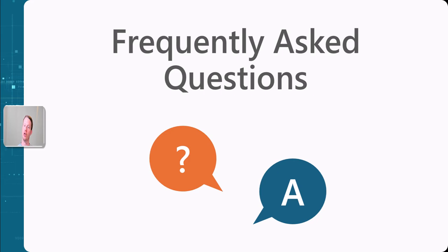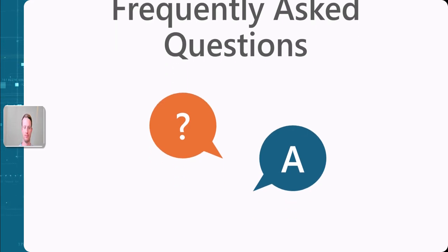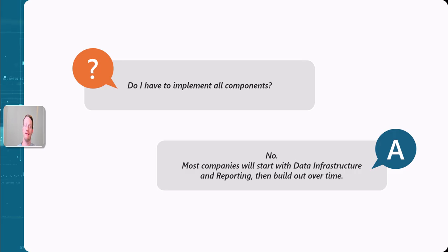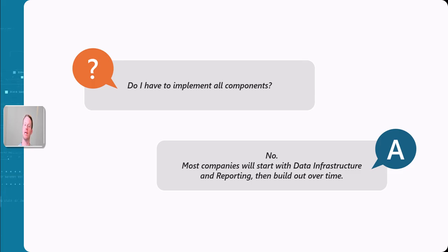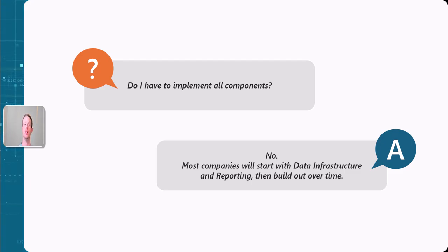Do you have to implement all components? No, not necessarily. Most companies will start with just things like the data infrastructure and reporting — just storing and reporting on the data — and then build out the other components over time. It doesn't have to be all at once. This is often a good approach to slowly build up as you learn how to be data driven as an organization.